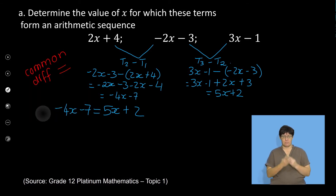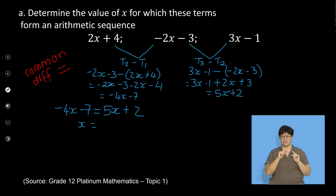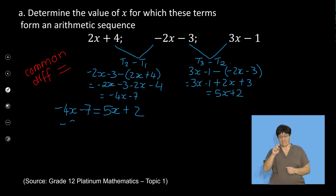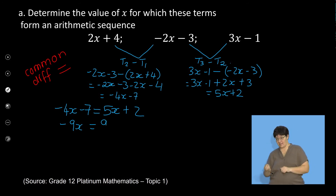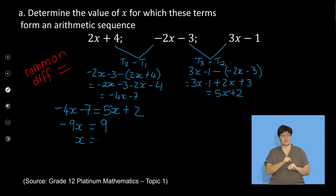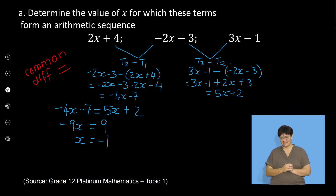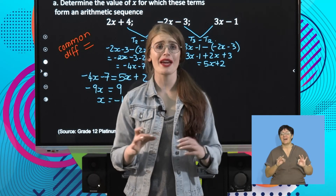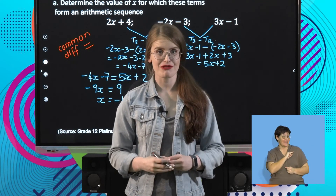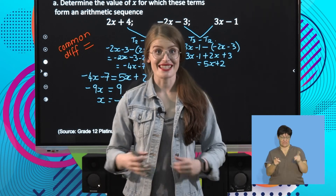Setting negative 4x minus 7 equal to 5x plus 2: bringing 5x to the left gives negative 9x, and taking negative 7 to the right gives positive 9. Dividing both sides by negative 9 gives x equals negative 1. The main reason I could solve for x was by equating the common differences and solving algebraically.